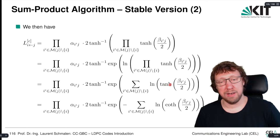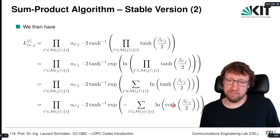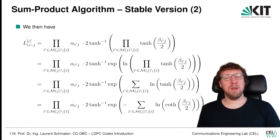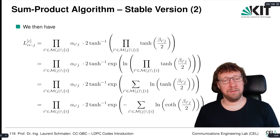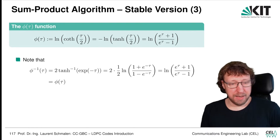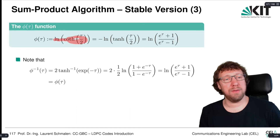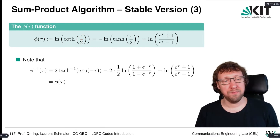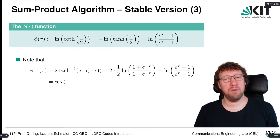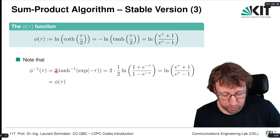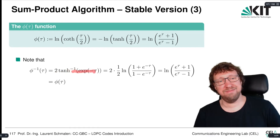Slightly rewriting: instead of log of hyperbolic tangent, this is minus the log of the hyperbolic cotangent — since the hyperbolic cotangent is the hyperbolic tangent to the power minus 1, and the logarithm brings that power out as a negative sign. So we can define the function phi(τ) = log(coth(τ/2)), which equals log((e^τ + 1)/(e^τ − 1)). We can calculate the inverse function: it's 2 × tanh⁻¹(e^(−τ)).